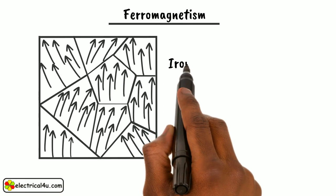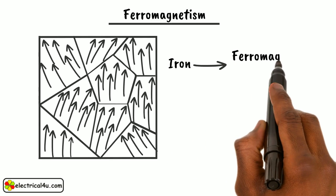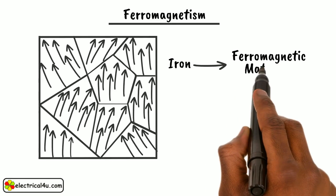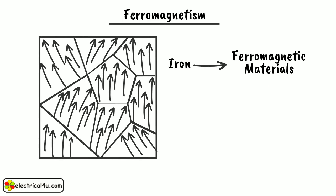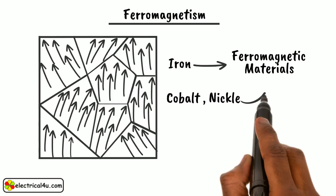Iron and some other materials exhibit this property are called ferromagnetic materials. Cobalt and nickel are other two popular ferromagnetic materials.